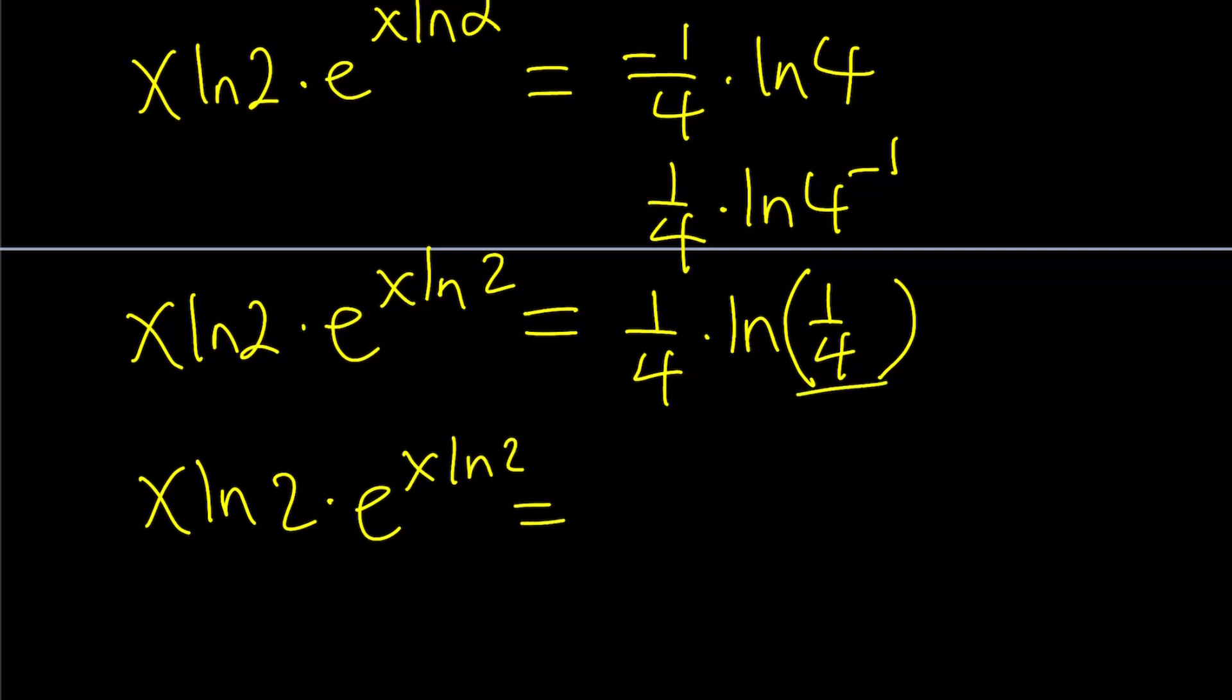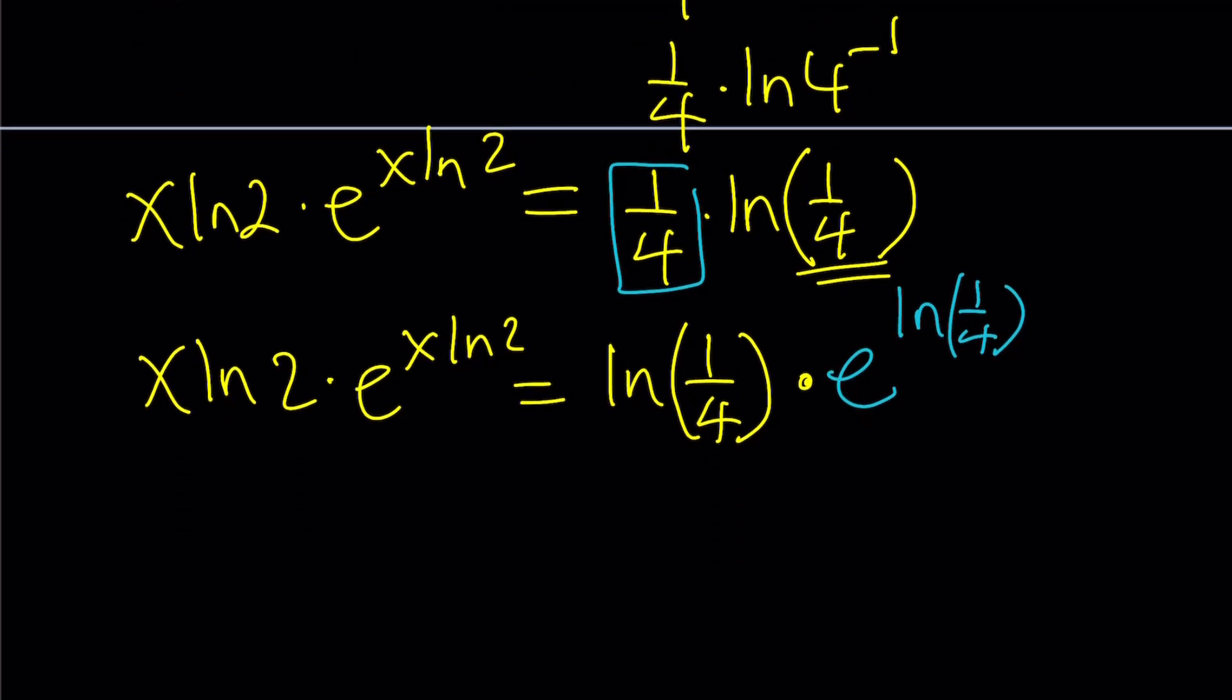So let's go ahead and now write this as x ln 2 e to the x ln 2. And now this time, I'm going to start with this ln 1 fourth is going to go first, times, I'm going to replace 1 fourth with e to the power ln 1 fourth. And now I got another t e to the t.